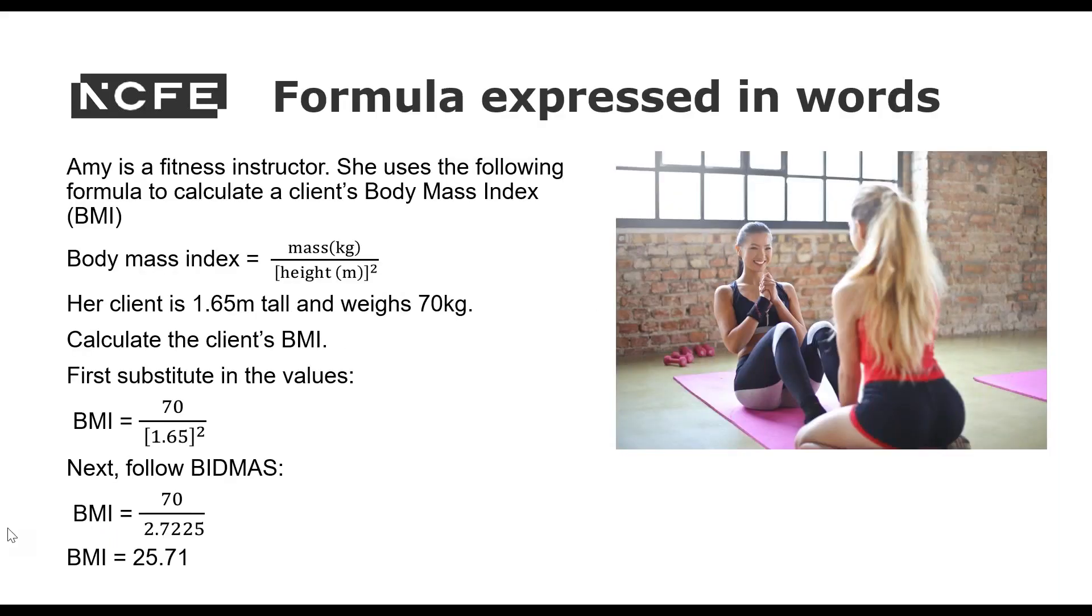Here's another one. Amy is a fitness instructor. She uses the following formula to calculate a client's body mass index. So this one is more complicated because it involves indices and also a fraction. However, we can substitute in the values and solve in exactly the same way. So Amy is a fitness instructor. She uses the following formula to calculate a client's body mass index BMI. So it's mass in kilograms divided by the height squared, height in meters squared. So she has a client who's 1.65 meters tall and weighs 70 kilograms.